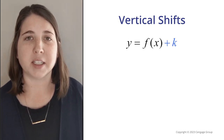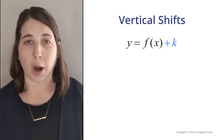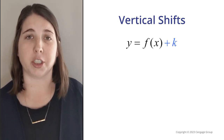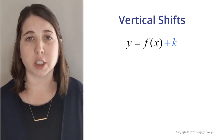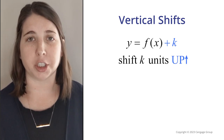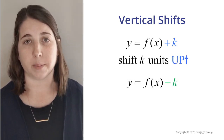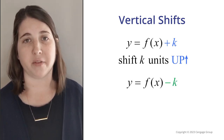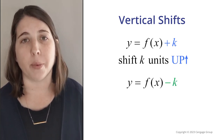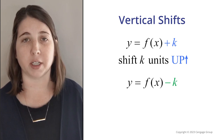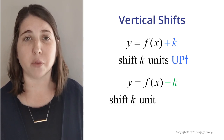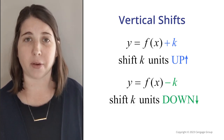If we add a positive number to the output of a function, the corresponding graph will shift up. And if we subtract a positive number from the output of a function, the graph will shift down.